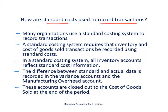Many organizations use a standard costing system to record transactions. Essentially, a standard costing system requires that inventory and cost of goods sold transactions be recorded using standard costs. All product costs — direct materials, direct labor, and manufacturing overhead — go through these accounts at the standard cost. In a standard costing system, therefore, all inventory accounts reflect the standard cost information at any point in time. This brings up the question: what happens to variances between the standard cost and actual cost throughout the period?